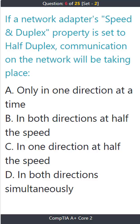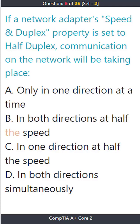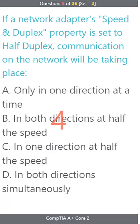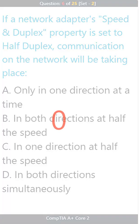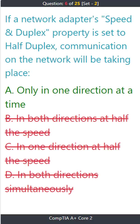Question 6. If a network adapter's speed and duplex property is set to half duplex, communication on the network will be taking place: A) only in one direction at a time, B) in both directions at half the speed, C) in one direction at half the speed, D) in both directions simultaneously. The correct answer is A) only in one direction at a time.